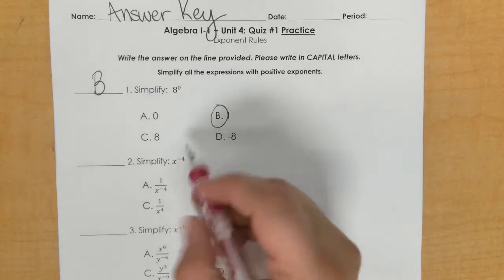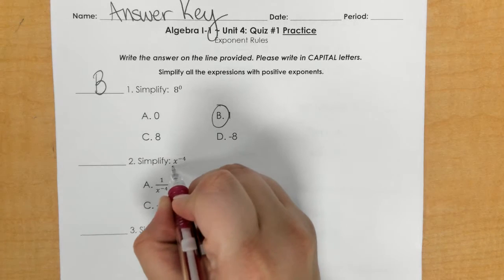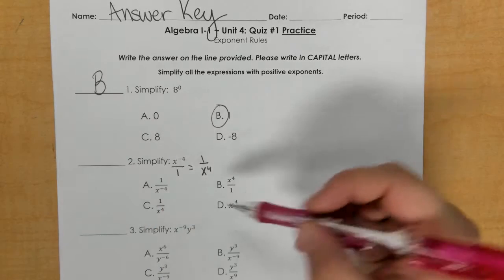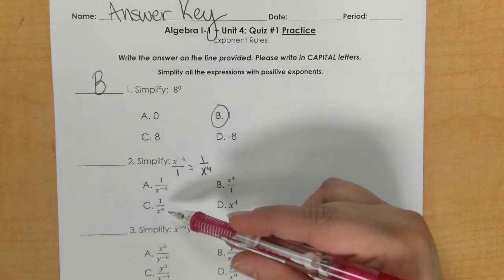For number 2, we have a negative exponent, so we're going to put this over 1 and flip it. So I should have 1 over x to the 4th positive, so that would be C.